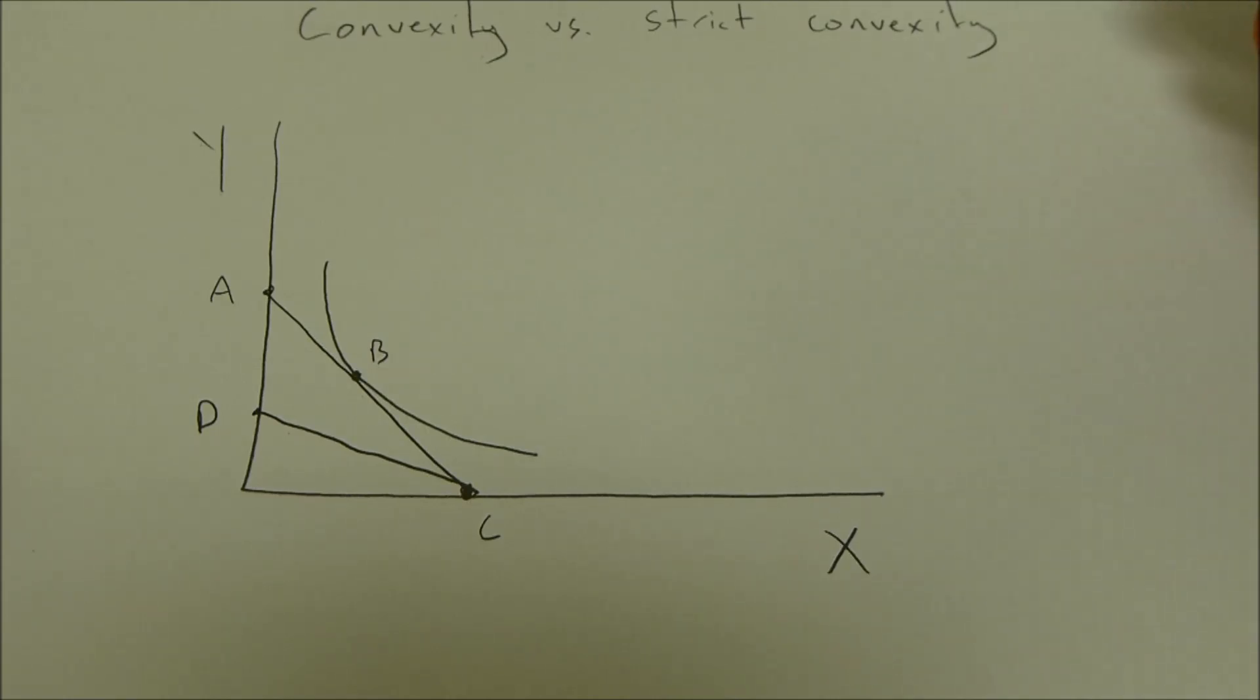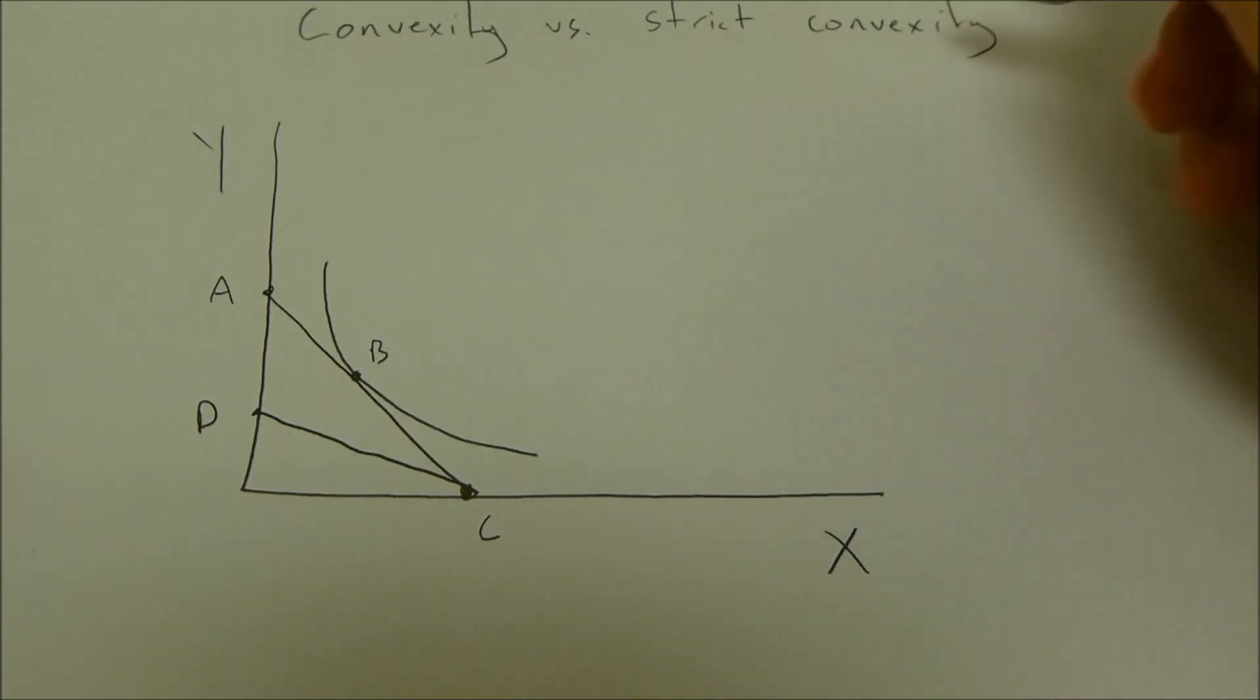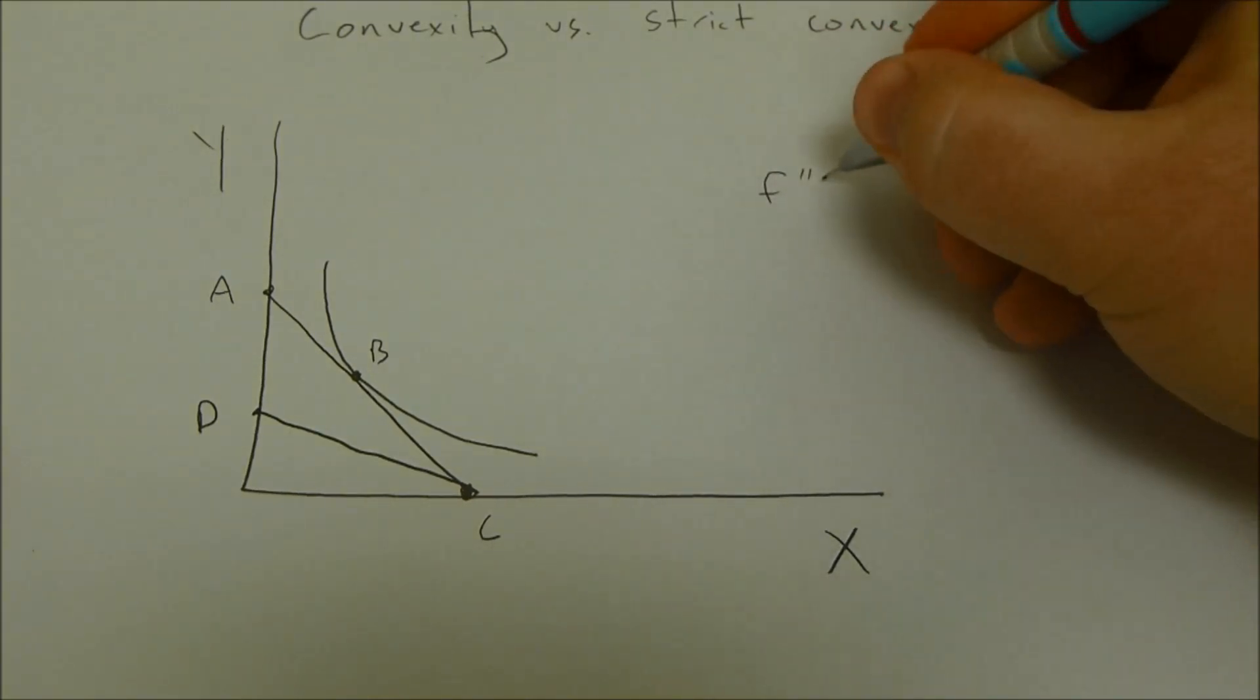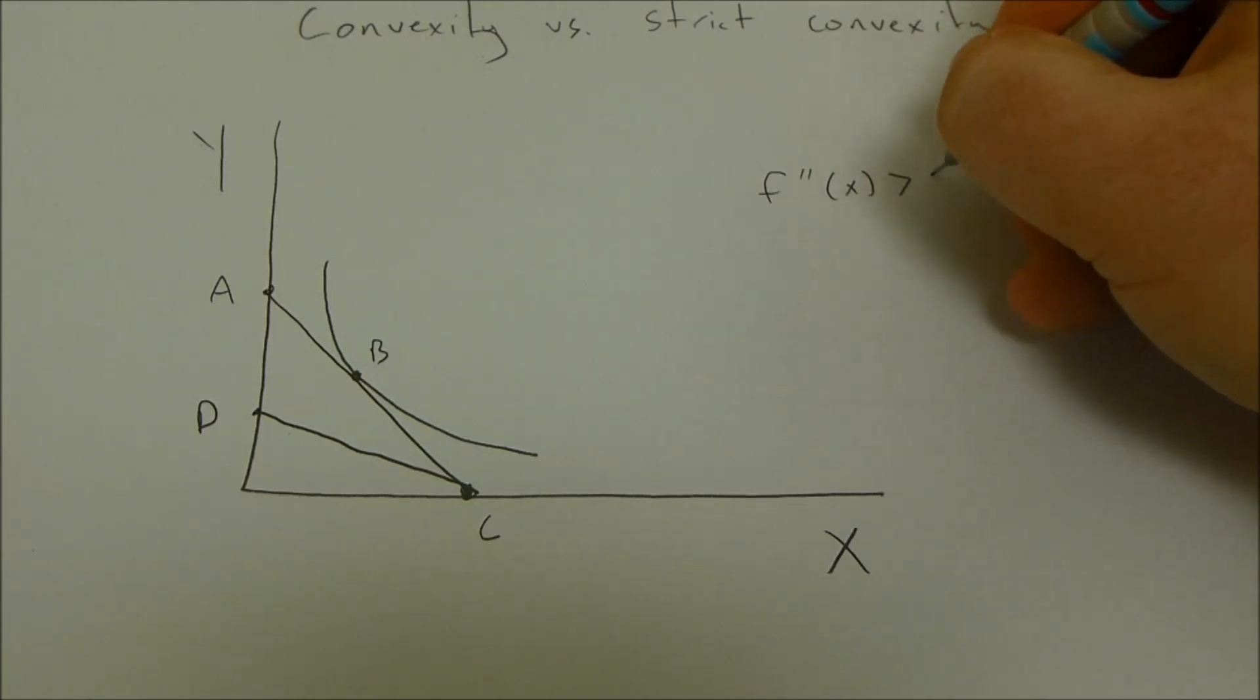The most important thing to remember when distinguishing between the two is that strict convexity implies that the second derivative, or f double prime of x, is greater than zero.